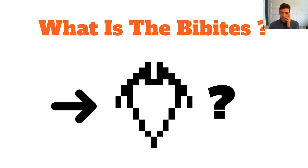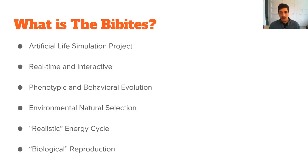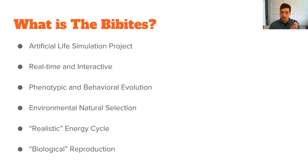I'll give you a summary of what the Bibbits is to give you some context for the rest of the talk. The Bibbits is an artificial life simulation project, although when I started working on it, I didn't even know that artificial life was even a field. Some of its particular features are a real-time graphical and interactive simulation. It also displays both phenotypic and behavioral evolution, presents environments with natural selection driven by the environment — I think you call this open-ended evolution in the field. It also features a closed-loop energy cycle and biological reproduction.